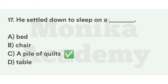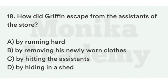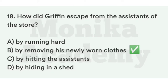Question 18: How did Griffin escape from the assistants of the store? अगली सुबह assistants आए और Griffin को pile of quilts पर सोते देखा, पकड़ने की कोशिश की. Option A: By running hard. Option B: By removing his newly worn clothes. Option C: By hitting the assistants. Option D: By hiding in a shed. The correct answer is B — By removing his newly worn clothes. Griffin ने एक-एक करके अपने कपड़े उतारे और invisible हो गया.